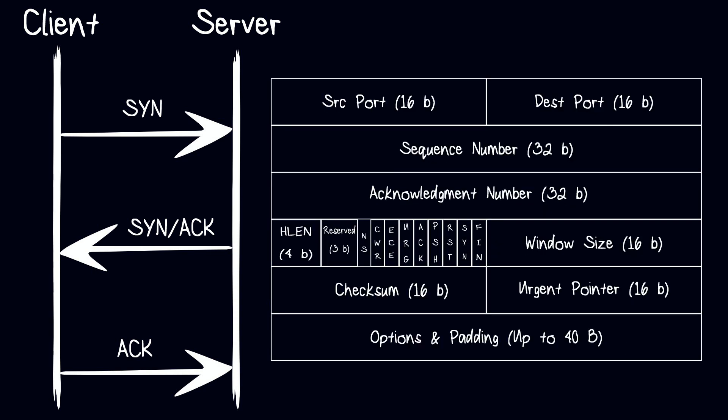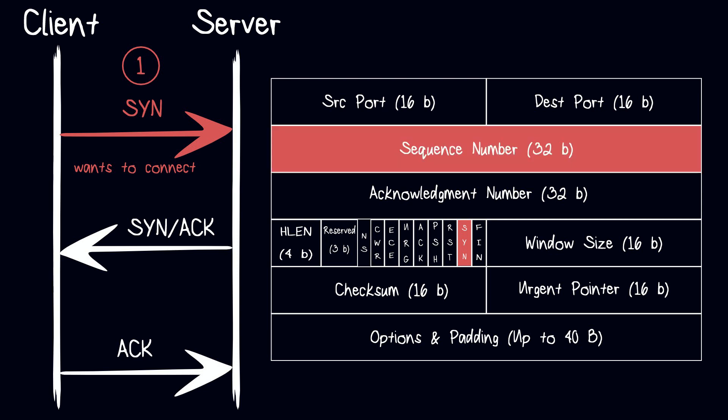First of all, the client sends a packet with the SYN flag set to 1 to the server, indicating that it wants to initiate a TCP connection. The SYN packet includes a sequence number that the server will use to acknowledge the connection request. As explained in our TCP header video, this sequence number is a large random 32-bit integer.